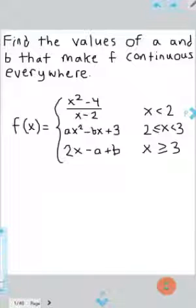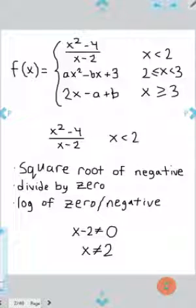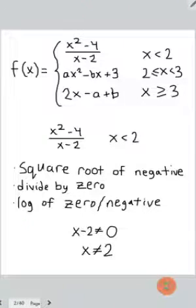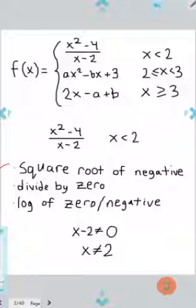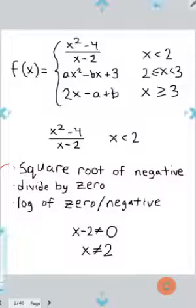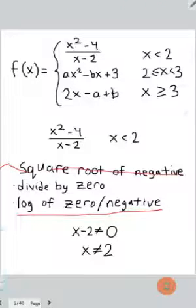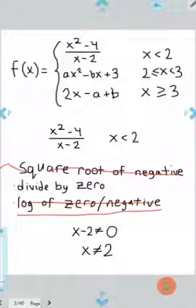Once you've checked that, you can make sure they're continuous when you go from piece to piece. We'll start with the first piece, where F is defined as x squared minus 4 all over x minus 2, when x is less than 2. When looking for discontinuities, the main things to look out for are square roots of negatives and logs of zero or negatives — we don't have any of those here.